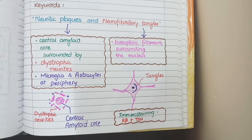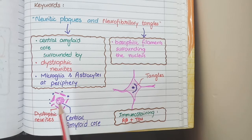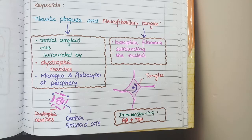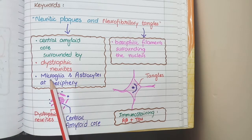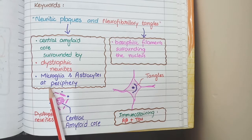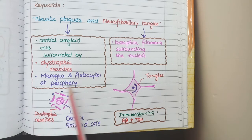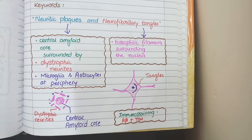In this diagram, you can see there is a central amyloid core and it is surrounded by dystrophic neurites. Now surrounding these are microglia and astrocytes. These microglia are macrophages and their duty is to phagocytose the degenerated matter, and these astrocytes will play their role in proliferation of glial tissue.